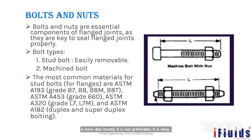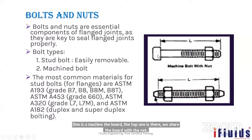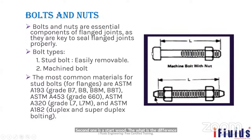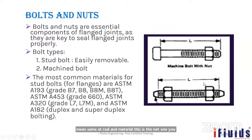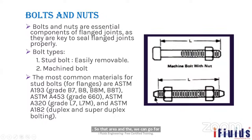Two major types of fasteners are used for flanges: machined bolt with nut, and stud bolt. In stud bolts, both ends are threaded and two nuts are used — one at each end. Stud bolts are preferred for flanges that require frequent removal, such as pump flanges or valve flanges, because they are easier to service. Washers are used on both sides.